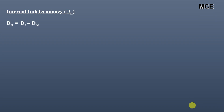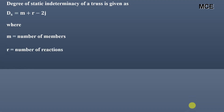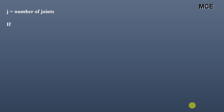The internal indeterminacy equals total static indeterminacy minus external static indeterminacy. The total degree of static indeterminacy of a truss is given as: ds = m + r − 2j, where m is the number of members, r is the number of reactions, and j is the number of joints in the truss.